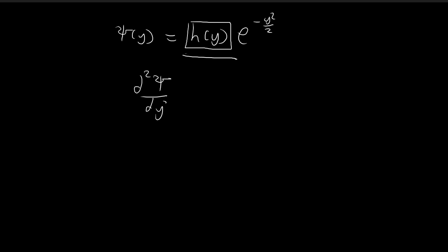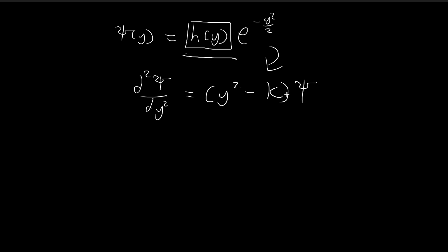Recall the Schrödinger equation looks something like this at this point. If we substitute this expression back into this differential equation, we will get another equation that will help us deduce what h of y should be. In order to substitute this back into the differential equation, we need to first determine what d squared xi dy squared should be.